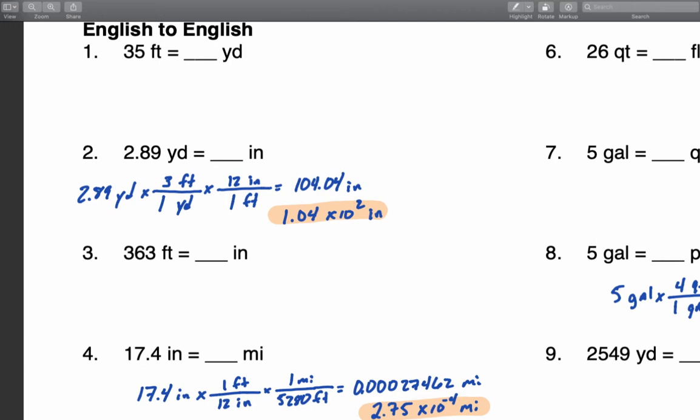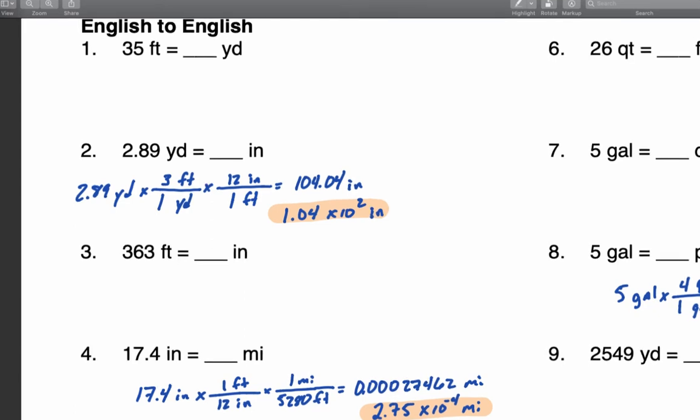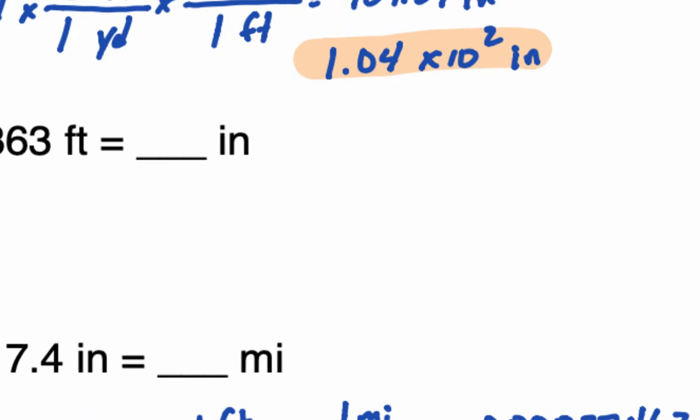So if the number you want to convert has three significant digits, your final answer should have three significant digits. For example, 2.89 converts to 104.04 inches, but since we only need three significant digits, on your calculator in scientific notation mode you would see 1.0404. In scientific notation, all numbers written to the left of the times 10 count as significant, so you simply write the first three: 1.04. If you need one, take the first one; if you need five, take the first five.